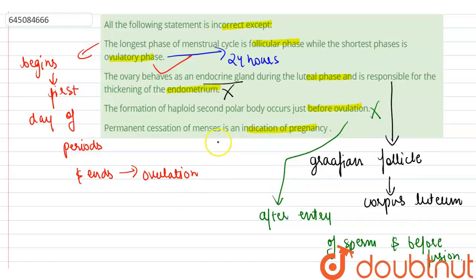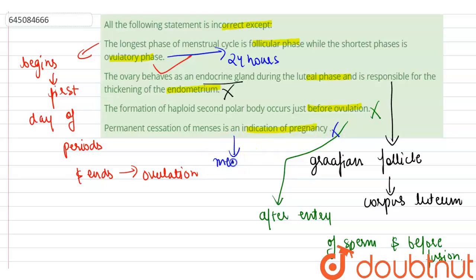The fourth option — permanent cessation of menses is an indication of pregnancy — is also incorrect. Permanent cessation of menses is called menopause, and it is not an indication of pregnancy.